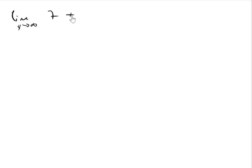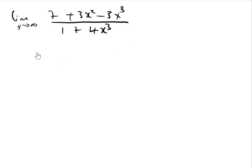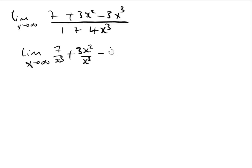In this example, we are asked to find the limit as x tends to infinity of 7 plus 3x squared minus 3x cubed, divided by 1 plus 4x cubed. We divide each term by x cubed, giving: 7 divided by x cubed, plus 3x squared divided by x cubed, minus 3x cubed divided by x cubed, all over 1 divided by x cubed, plus 4x cubed divided by x cubed.